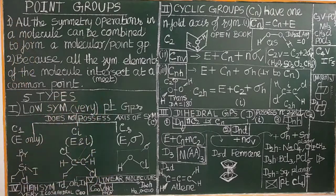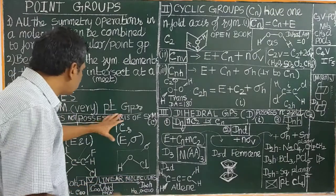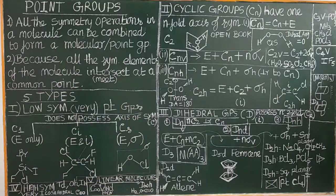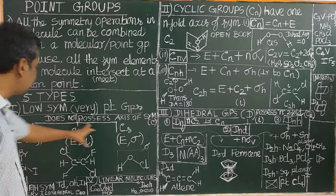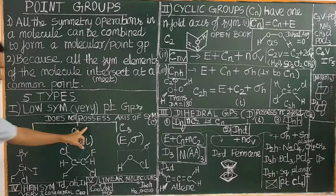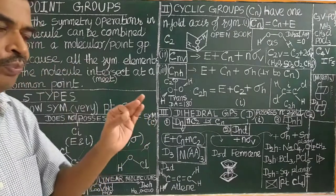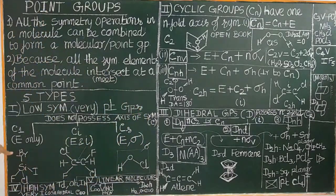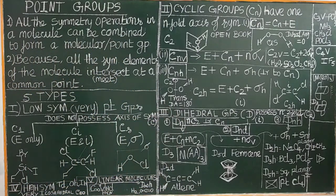The first type is low symmetry point groups. Low symmetry point groups do not possess any axis of symmetry. There are three types of low symmetry point groups: C1, Ci, and Cs. C1 consists of only the identity element operation, that is E only.